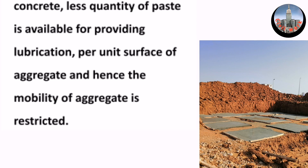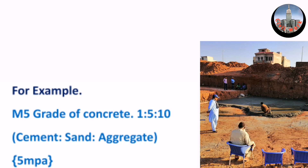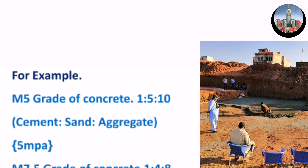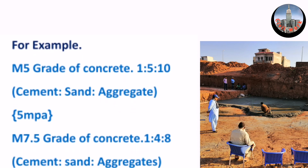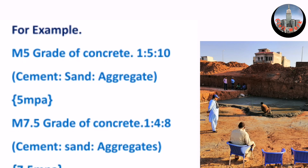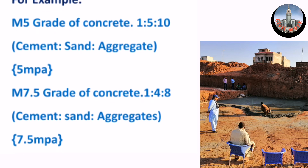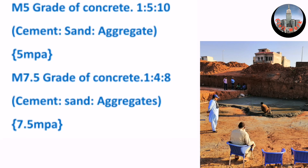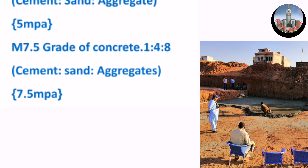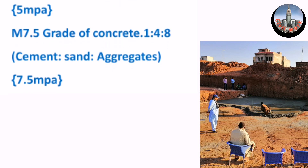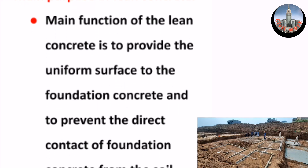In lean concrete, less quantity of paste is available for providing lubrication per unit surface of aggregate, and hence the mobility of aggregate is restricted. For example, M5 grade of concrete has a mix ratio of 1:5:10 — one part cement, five parts sand, ten parts aggregate — giving 5 MPa. M7.5 grade is 1:4:8 — one part cement, four parts sand, eight parts aggregate — giving 7.5 MPa.